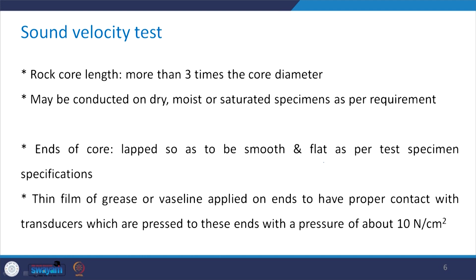Just as there are special specimen preparation requirements for UCS or Brazilian tests, there are specific requirements here. Rock core length should be 3 times the core diameter, meaning the L/D ratio must equal 3. These tests may be conducted on dry, moist, or saturated specimens depending on what condition is relevant in the field.